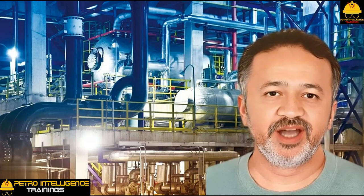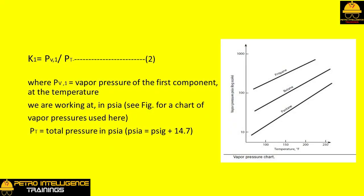For our work we will just say that the term concentration refers to the percent of a component that the operator would see in the gas chromatographic GC results as reported by the lab. The equilibrium constant, assuming the ideal gas law applies, is defined as K1 equals PV1 divided by PT, where PV1 equals vapor pressure of the first component at the temperature we are working at in psia.